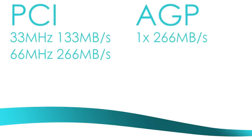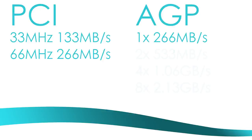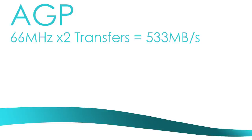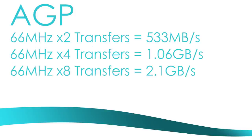And then, of course, there's the bandwidth improvement. Even the base AGP 1X interface is faster than the standard 33 MHz PCI, at 266 MB per second. AGP was actually introduced at 2X speed, which means twice the number of transfers per clock cycle at 66 MHz, resulting in 533 MB per second. While the clock speed would remain the same, the number of transfers per clock would increase from 4X to 8X, the latter of which would wind up being the final speed revision.